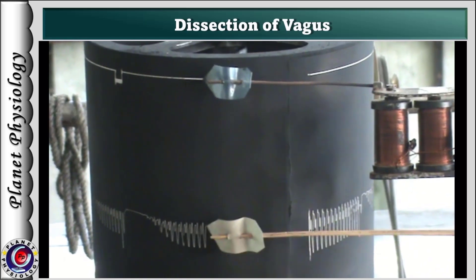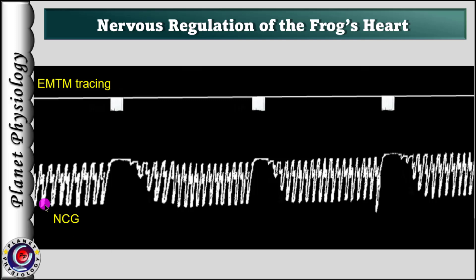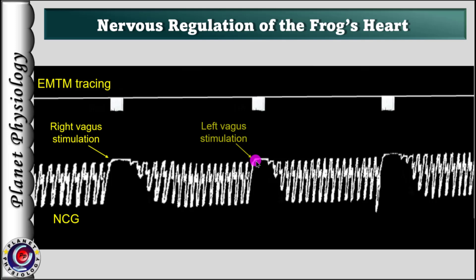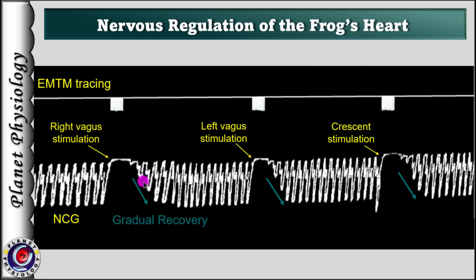Now let us label the record. Here is the normal cardiogram. As evident by the EMTM tracing, this is the effect of right vagus stimulation, here is the effect of left vagus stimulation, and finally the crescent stimulation. By now you must have noted that when the vagus or crescent is stimulated, the heart stops for some time and then gradually recovers — meaning vagus or parasympathetic innervation has an inhibitory effect on the heart.